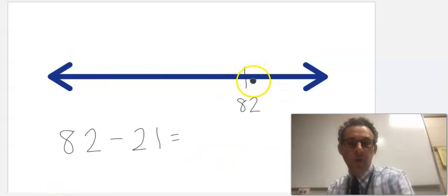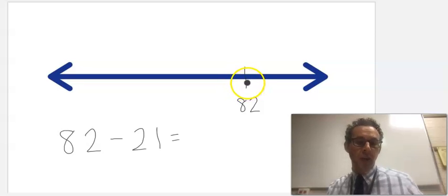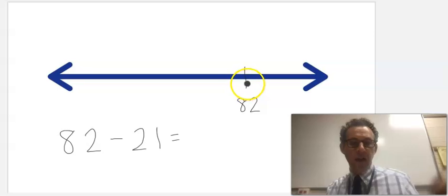And open number lines work just as great for subtraction. I'm going to start with 82 and mark that on a number line. Notice I left a lot of room on the left-hand side because when you subtract, you're going left, you're going in that direction.